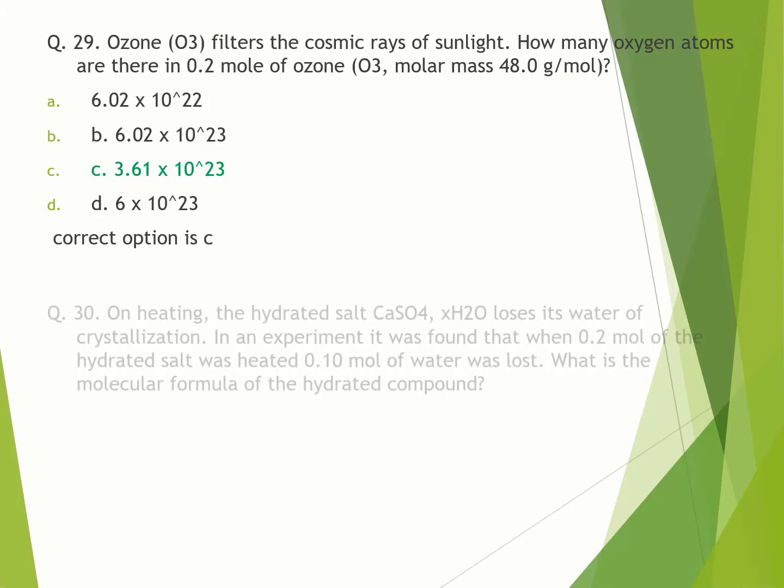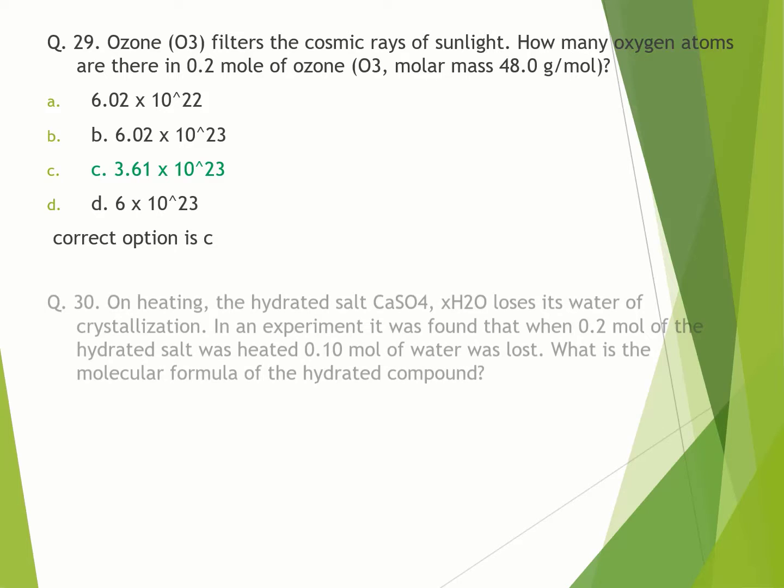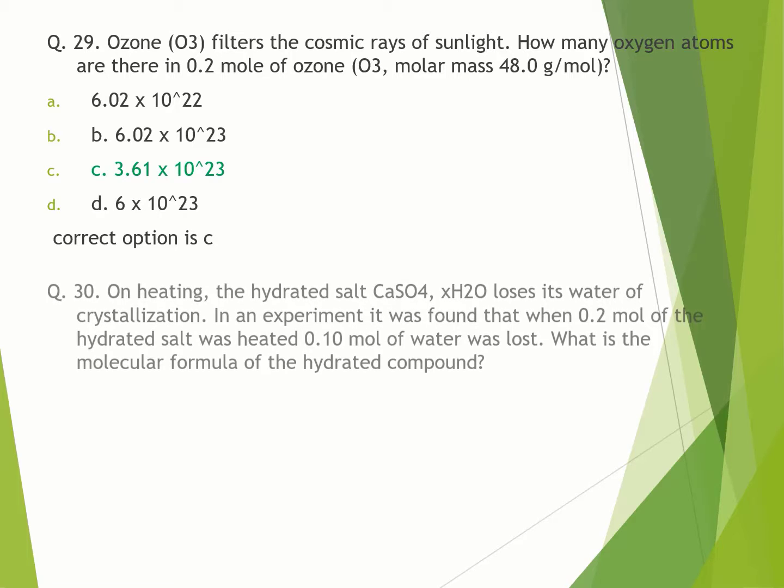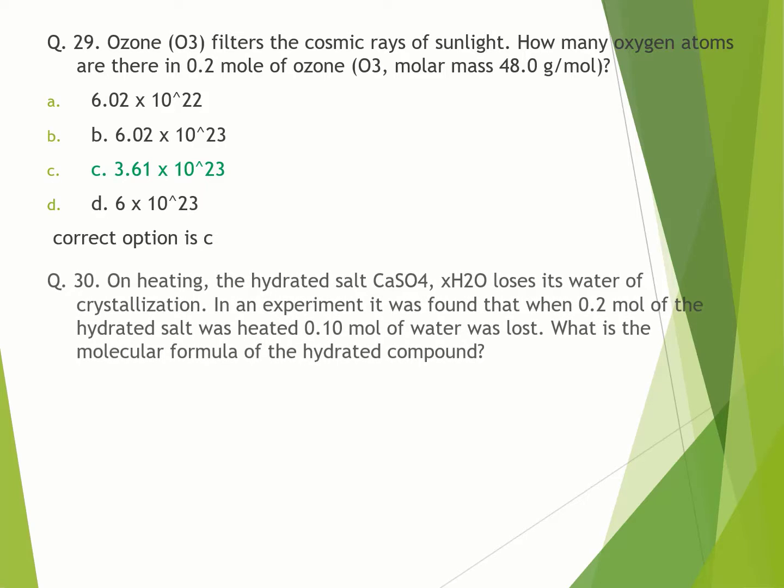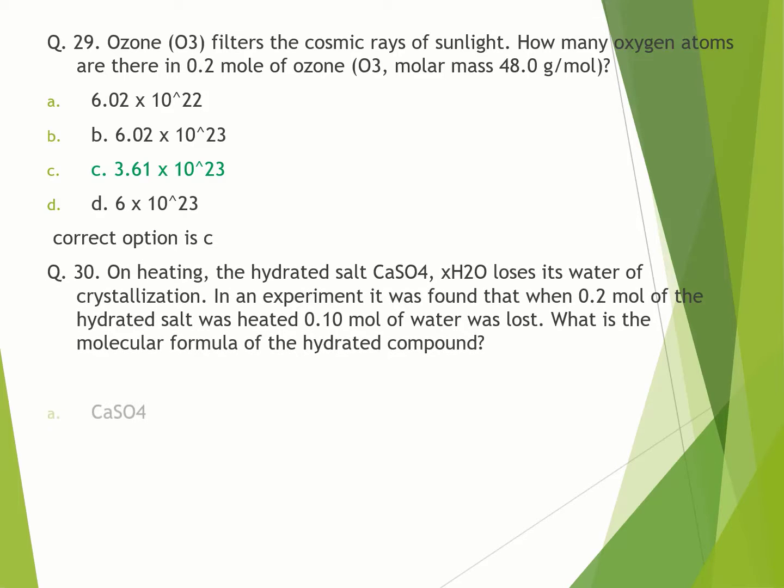Question number 30. On heating, the hydrated salt CaSO4·H2O loses its water of crystallization. In an experiment, it was found that when 0.2 moles of the hydrated salt was heated, 0.10 moles of water was lost. What is molecular formula of hydrated compound? A. CaSO4. B. CaSO4·3.5H2O. C. CaSO4·H2O. D. CaSO4·2H2O. Correct option is B.